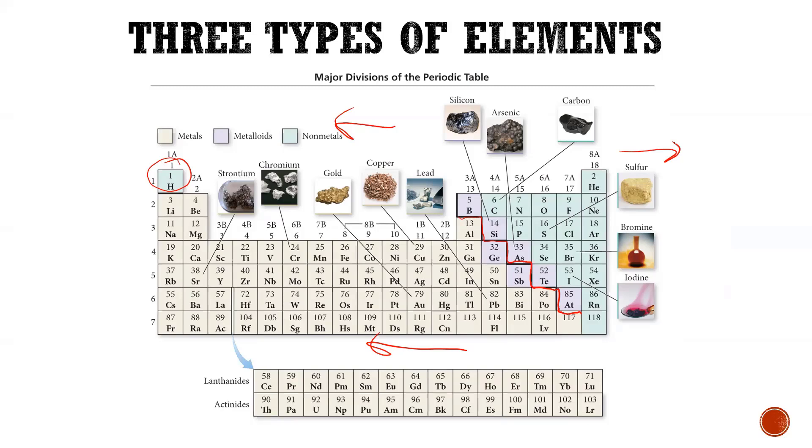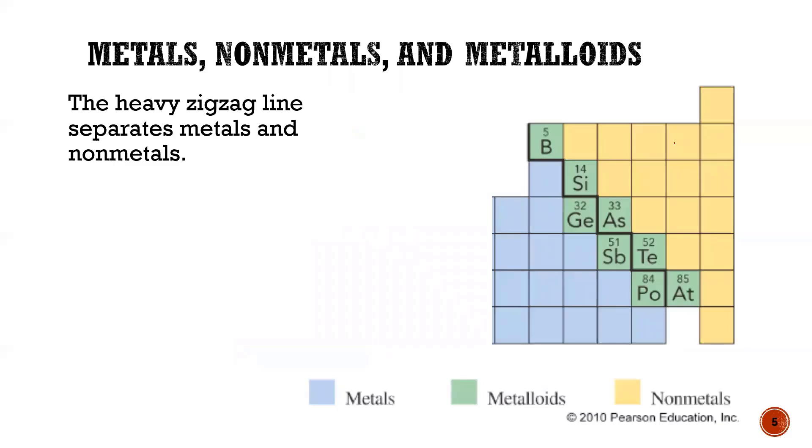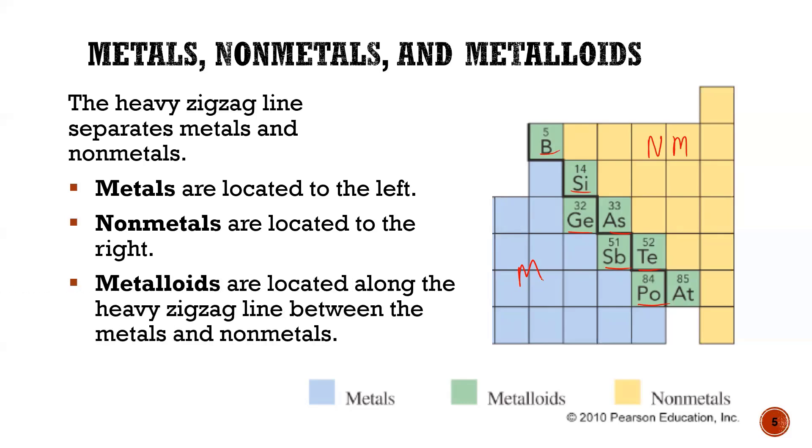So let's go a little bit further in the three types of elements. We have that zigzag and you can see along that zigzag you have elements like boron, silicon, germanium, arsenic, antimony, tellurium, polonium and astatine. All of those that are hugging along that line are actually considered metalloids. They're not really metals or non-metals but they separate the non-metals from the metals.